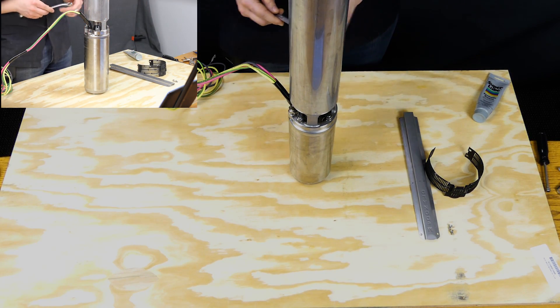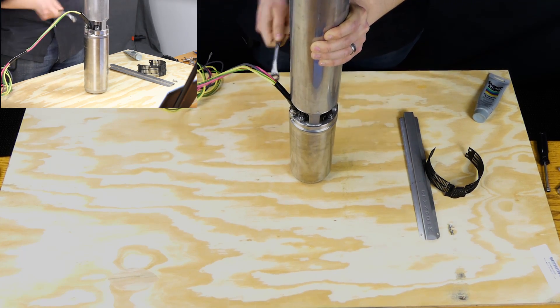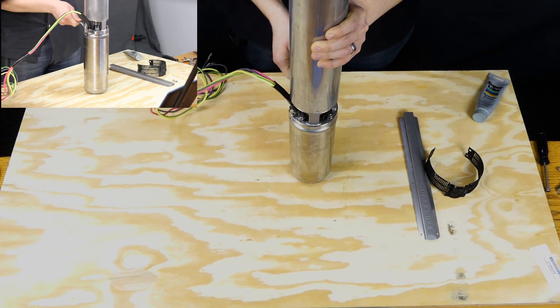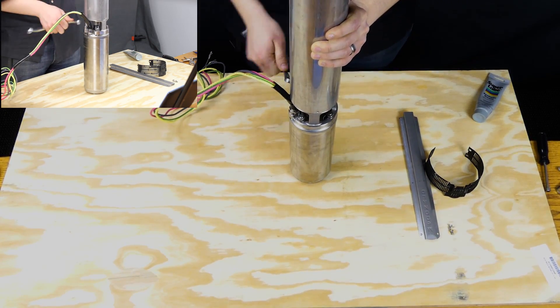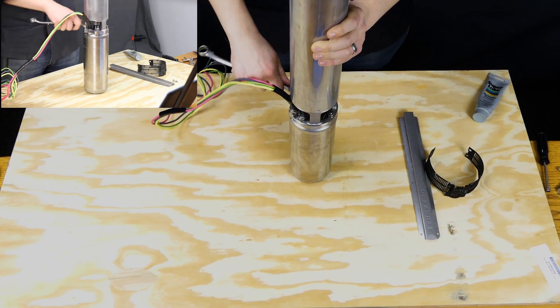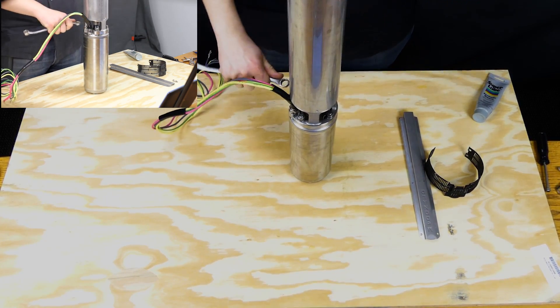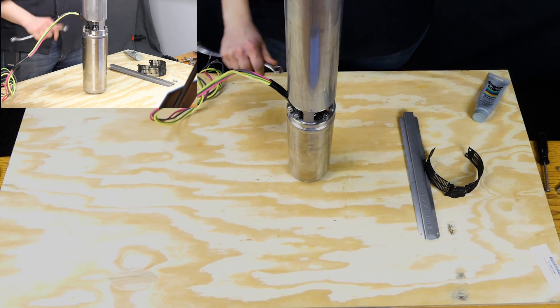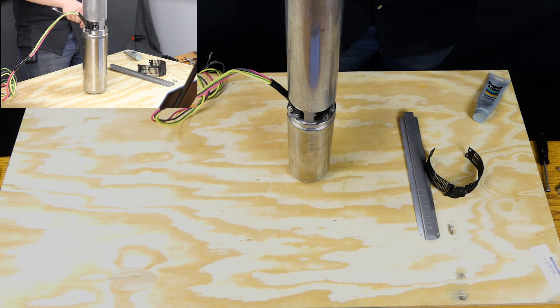Now you'll need a half inch wrench to tighten these down. And don't be afraid to get it pretty tight. You certainly don't want the motor to fall off of there.